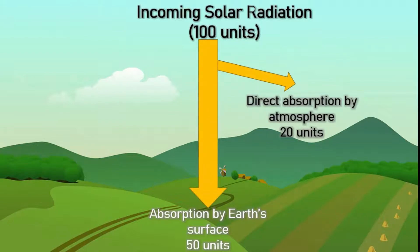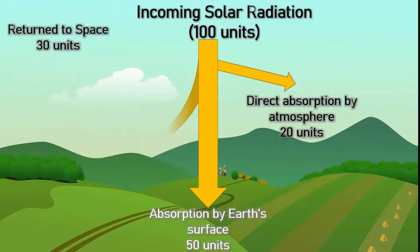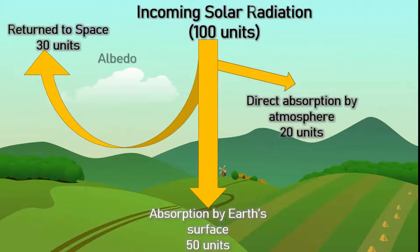And 30 units are returned to space. These 30 units are scattered and reflected back through cloud cover, suspended dust particles and gas molecules. This reflected energy is known as albedo.